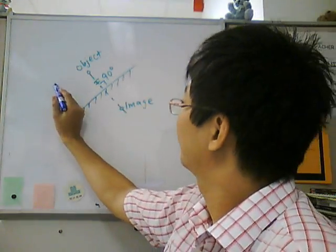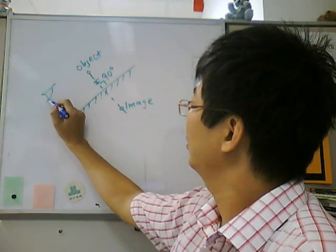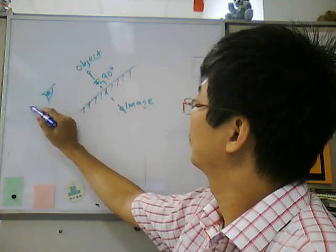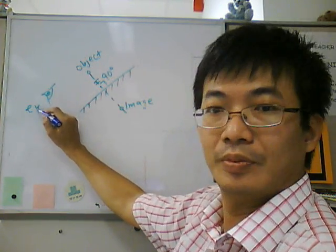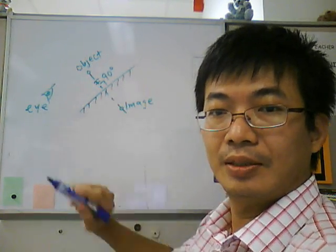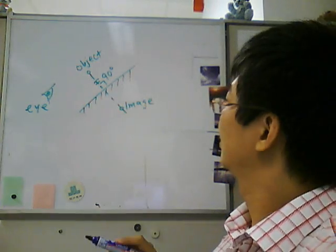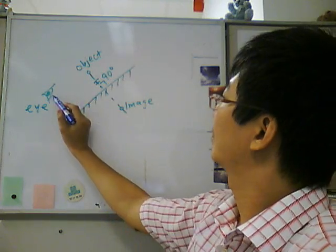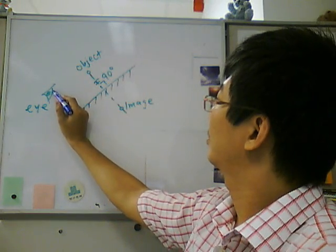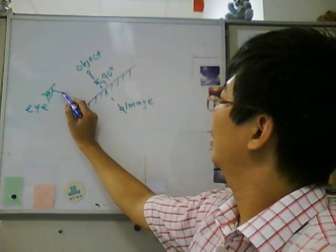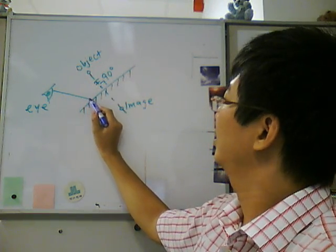Now next, you have to draw the eye. And from the eye, draw a line to the image.